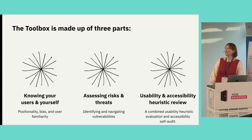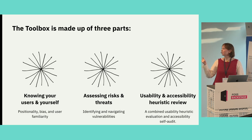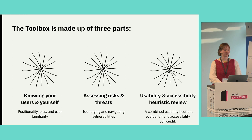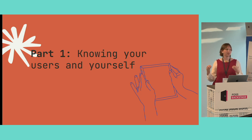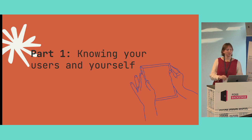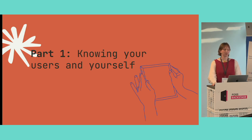That brings me to the toolbox itself, which is made up of three parts: knowing your users and yourself, assessing risks and threats, and our usability and accessibility heuristic review. Each section includes introductory text introducing key concepts and lines of inquiry, followed by a collection of resources, suggested activities, or replicable templates that your team can pull from depending on your project's needs.